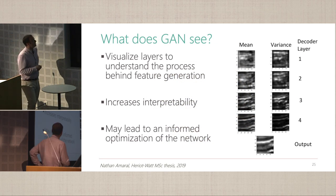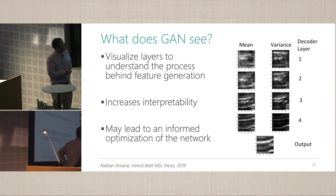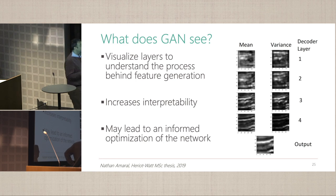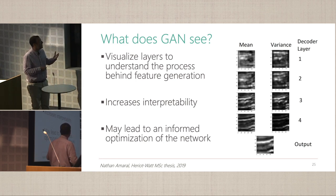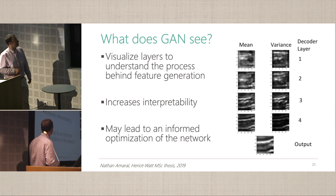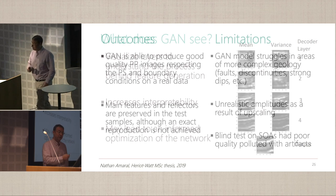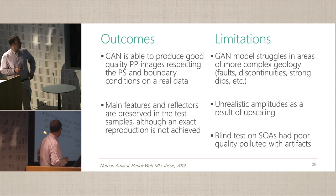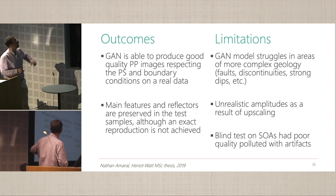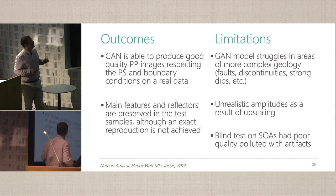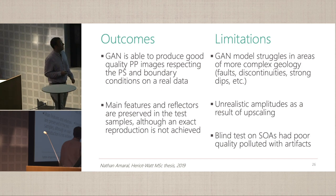Looking at what the GAN sees — the mean and variance across GAN layers — in the initial layers it picks up large-scale trends, and in the deeper layers it starts refining and sharpening horizon features. That may lead to some informed optimization of the network and potentially increased interpretability, since lack of interpretability is one of the drawbacks. In summary: able to produce some good quality PP images, but failed on the blind test.